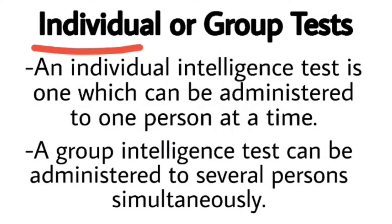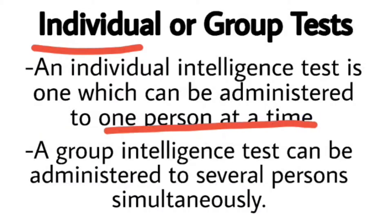In an individual test, an individual intelligence test is one which can be administered to one person at a time. So is test mein ek time pe ek hi candidate ka test liya jata hai. Ye test alag-alag variety ka ho sakta hai, jaise answer sirf yes or no mein dena hai, ya phir blank space mein likhna hai, ya phir MCQ type ka hoga jis mein char options hongi aur aapko ek choose karna hai. Individual test mein aap orally bhi answer de sakti ho aur written mein bhi, kyunki sirf ek hi candidate ka test hota hai toh kisi bhi form mein ho sakta hai.